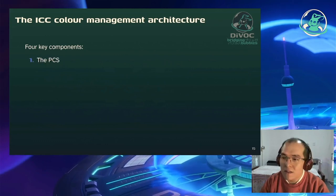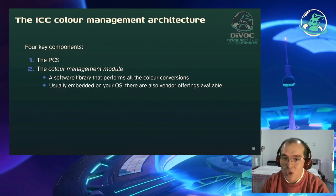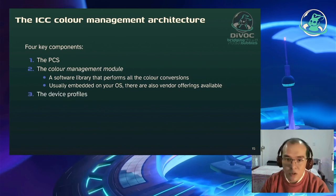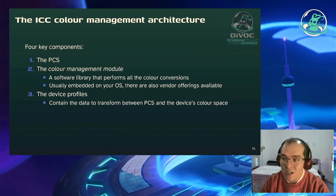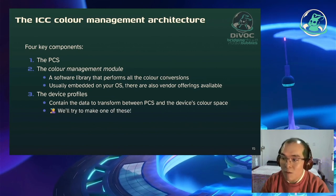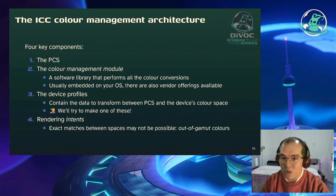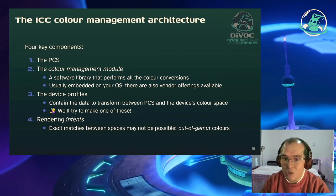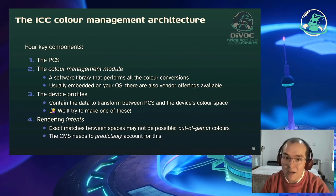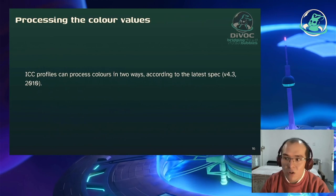Es gibt vier Schlüsselkomponenten: erstens der Profile Connection Space, zweitens das Farbmanagement-Modul – eine Software-Library, die die Umwandlungen durchführt, meist als Teil des Betriebssystems. Drittens das Geräteprofil, das alle Daten enthält, um umzuwandeln zwischen dem PCS und dem Farbraum des Geräts – und ein solches wollen wir erstellen. Und viertens die Rendering Intents: die Frage, was man macht mit Farben, die nicht im Gamut drin sind, also nicht dargestellt werden können.